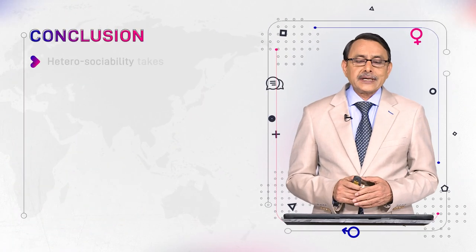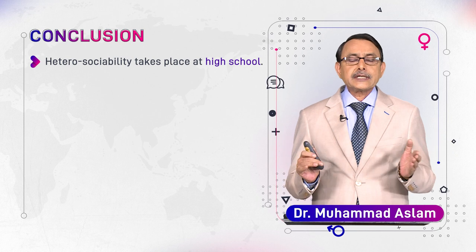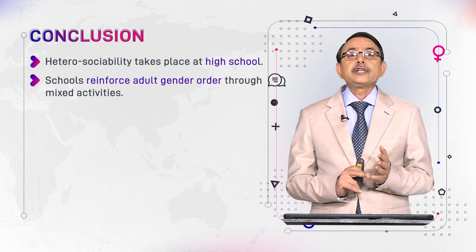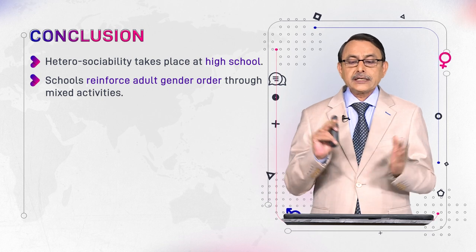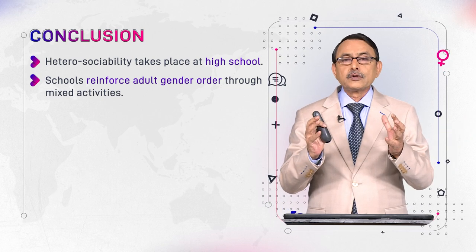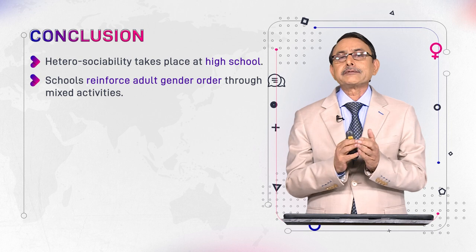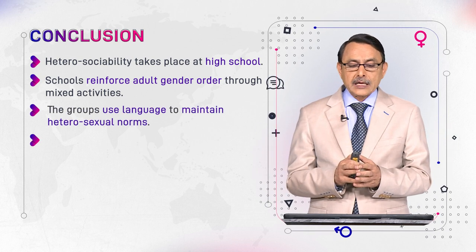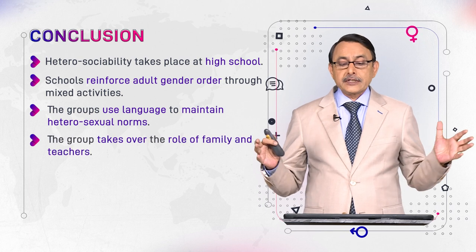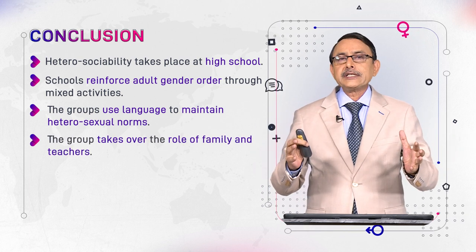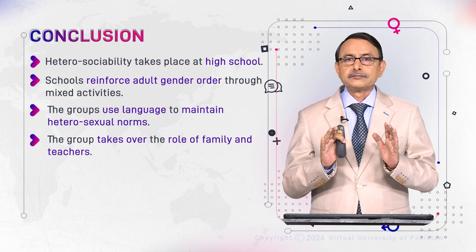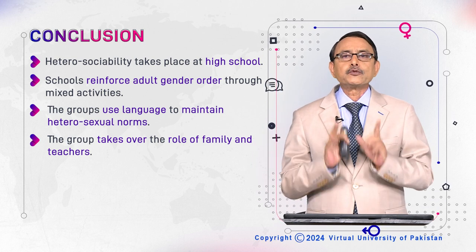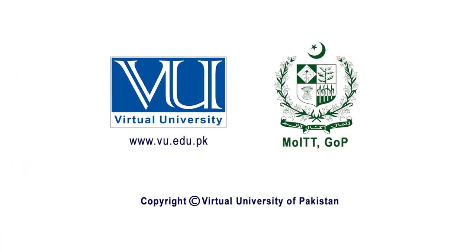We conclude that heterosexuality takes place at high school. High schools reinforce adult gender order through mixed activity when both sexes are involved. The group takes over the role of family and teachers. The group is the entity that maintains the gender order.